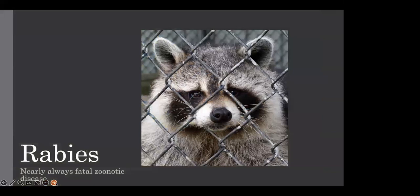The CDC defined rabies in humans as an acute, progressive encephalomyelitis that is nearly always fatal once symptoms begin. Interestingly, acute in medical terminology is a severe and sudden condition, which would be likened to a fractured bone or an asthma attack. However, in common language, acute is a bad, difficult, or unwelcome situation or phenomenon. Regardless of which definition we are looking at, we can all agree that the outcome for untreated rabies is horrific and terminal for the patient.